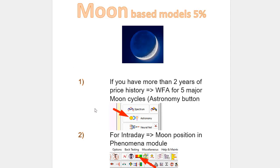So I recommend using two models to build a moon-based model. The first model — if you have price history of more than two years, maybe better three years — I recommend to conduct walk-forward analysis for five major moon cycles. This is the astronomy button.